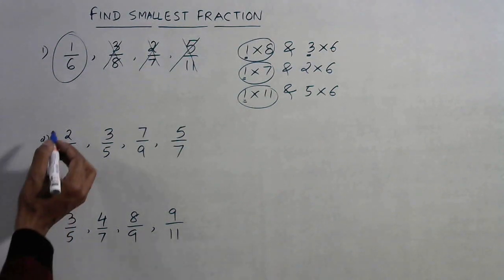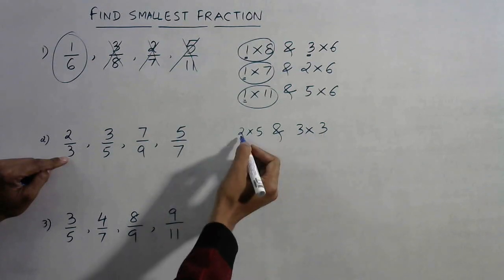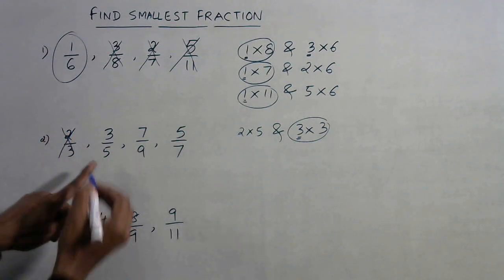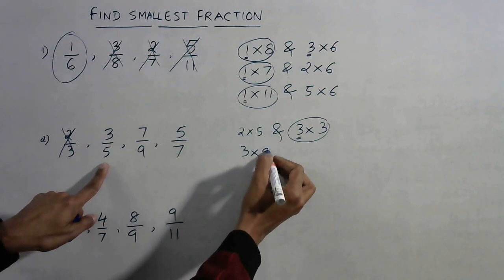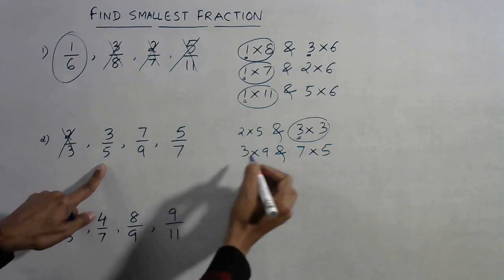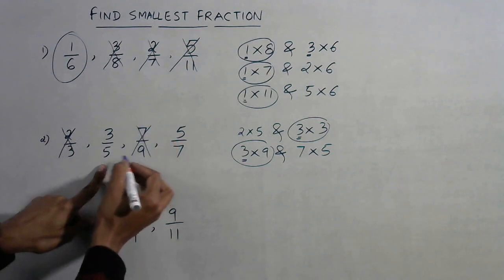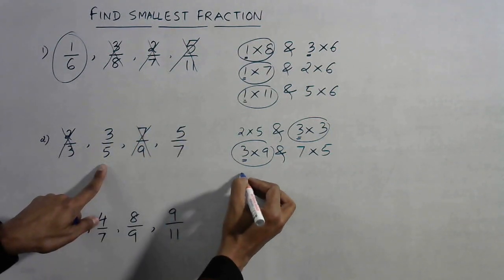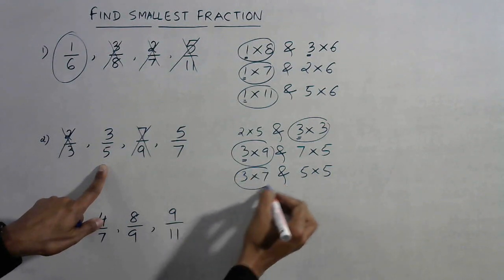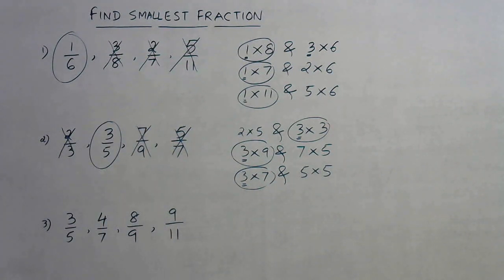Let's take one more example. Cross multiply the first two: 2 into 5 is 10 and 3 into 3 is 9. The smaller product is 9, so numerator 3 gives the smaller result — this fraction is small, discard 2/3. Now compare 3/5 and 7/9: 3 into 9 is 27 and 7 into 5 is 35. Since 27 is smaller, numerator 3 is retained and 7/9 is discarded. Next, 3 into 7 is 21 and 5 into 5 is 25. Since 21 is smaller, we get the smallest fraction as 3/5.